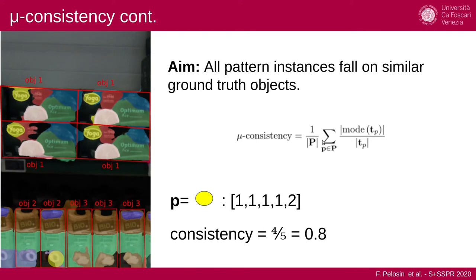Let's say the yellow pattern falls on a different object, in object two in this case. So we have that the pattern falls four times in object one and one time in object two. So the mode is one, and the cardinality of the mode is four, but the number of instances is five, so we have less consistency because we have a mistake. We do so for each pattern and then take the mean, and that's why it's called mu-consistency.